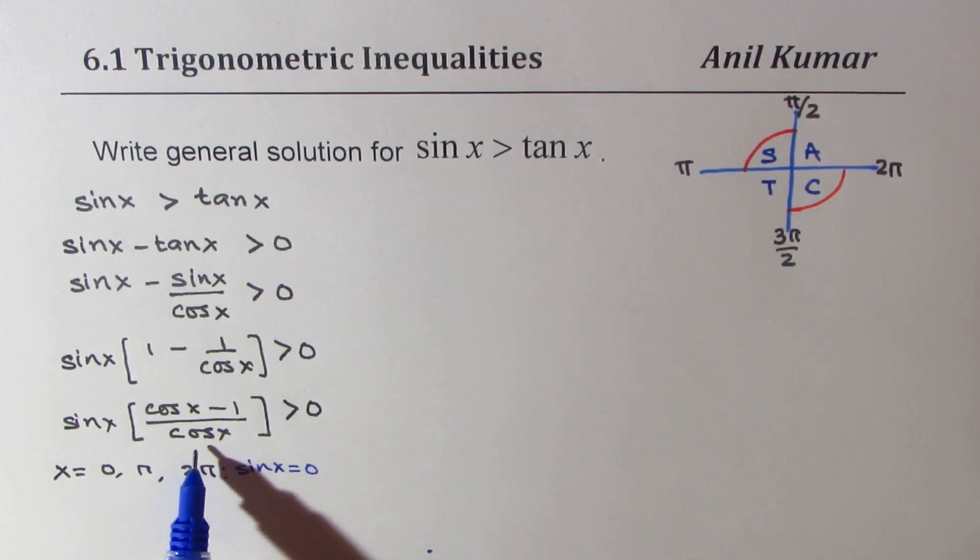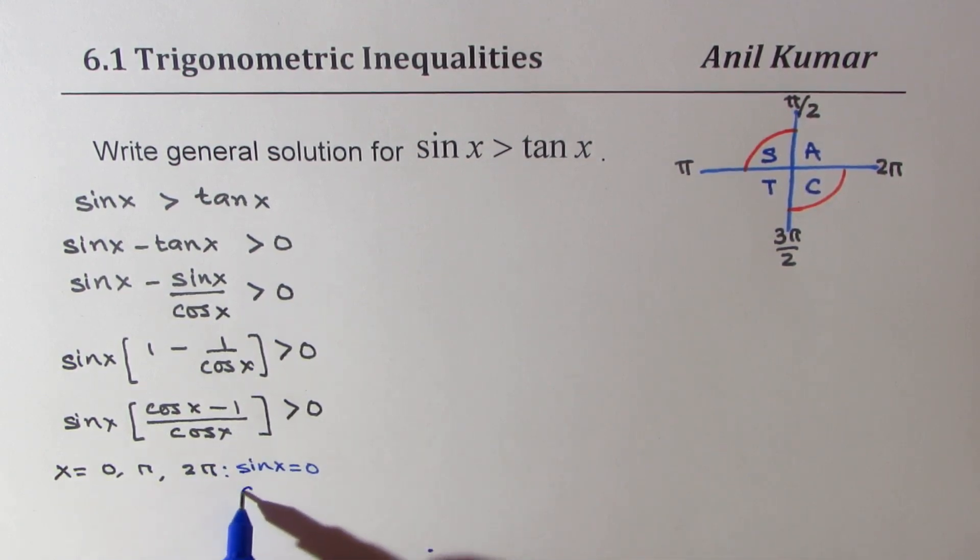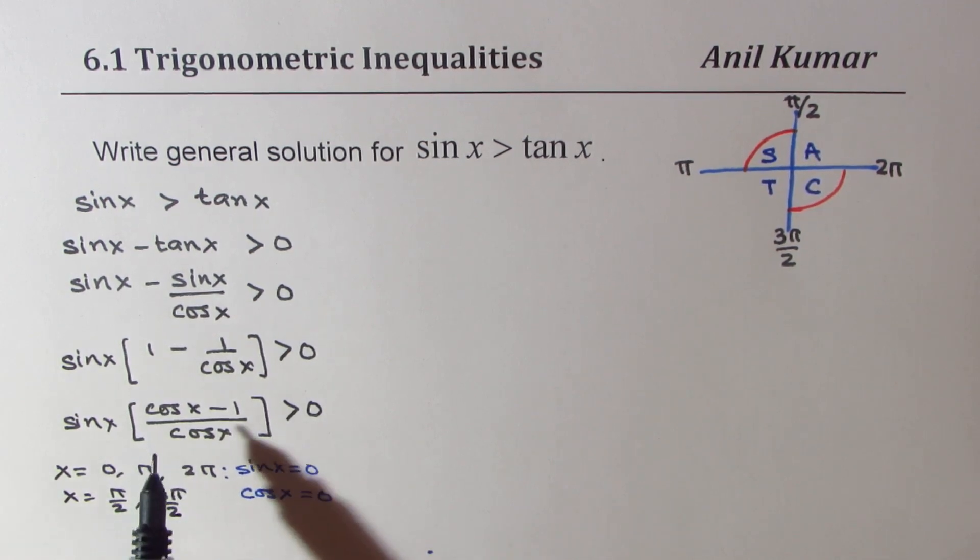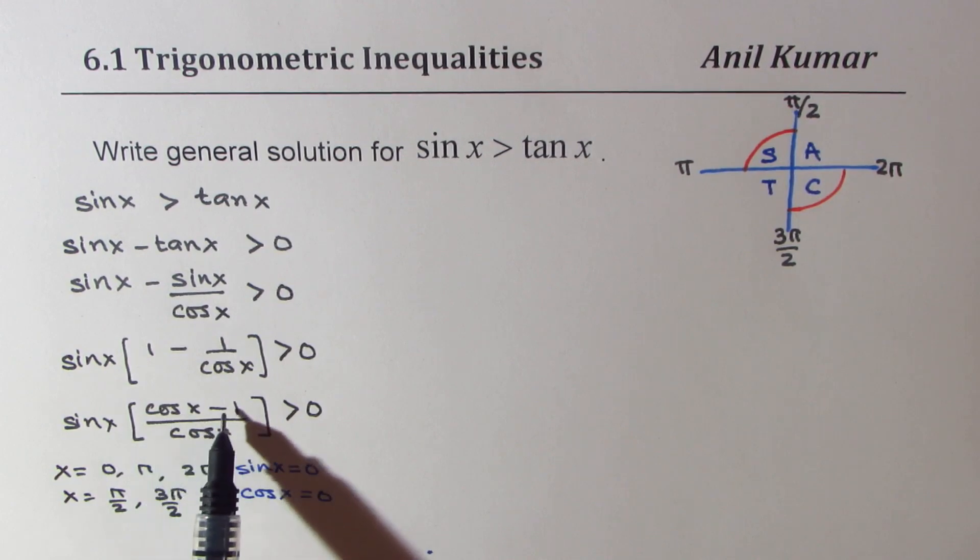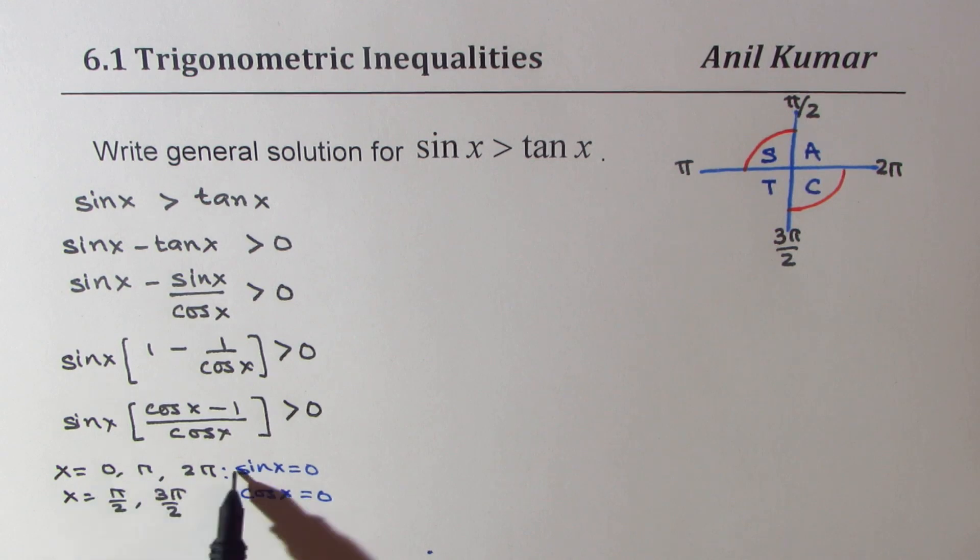As far as the value of cos x is concerned, it is equal to 0 for x equals to pi by 2 and 3 pi by 2. And we know cos x is equal to 1 at 0, which is already covered. So these are five points which should be analyzed to solve this inequality.